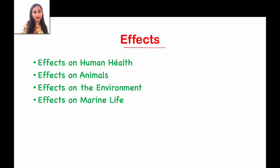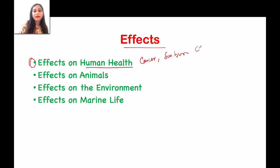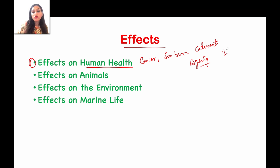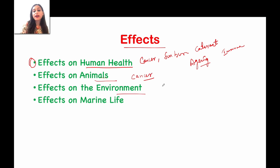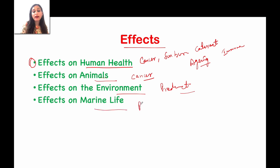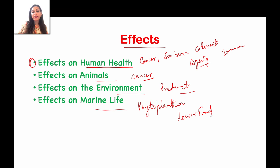The effects of ozone depletion: in human health, you have cancer, sunburns, cataracts, accelerated aging, and a weakened immune system. In animals, there are also many effects — eye cancer and skin cancer. For the environment, plant productivity will be reduced, forests will be affected, and in marine life, phytoplanktons will be affected, which will impact the lower food chain. All harmful UV radiations will reach Earth and cause these effects.